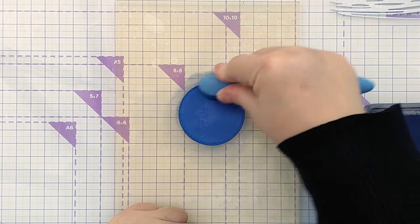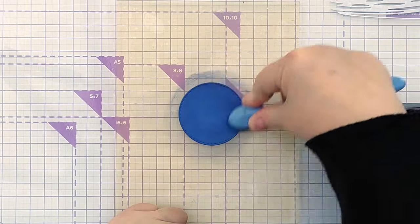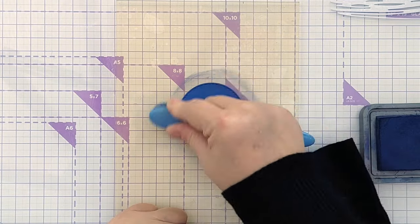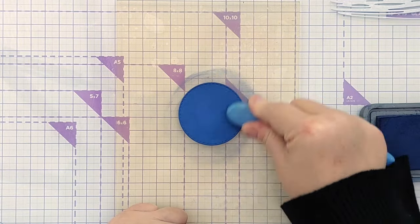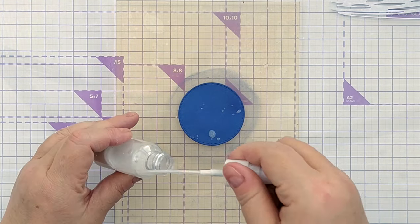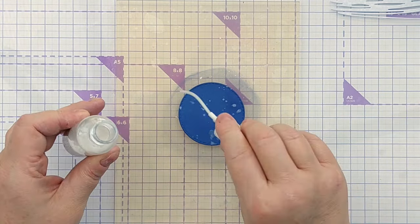So to color my circle I used Chipped Sapphire Distress Oxide which is a lovely deep indigo reminiscent of a night sky and I wanted this circle to be dark because I wanted to put a lighter star on top.